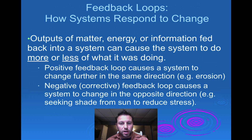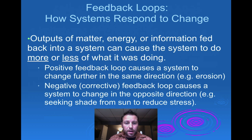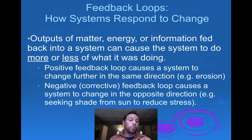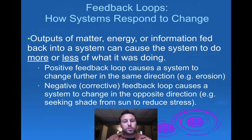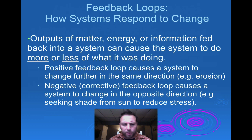Negative feedback loops are where a change occurs and then an opposite change happens in response. One easy example is with humans: when we sweat, we sweat because we're hot, then the water droplets on our skin evaporate and our temperature cools — that's a negative feedback loop. A change in one direction causes an opposite effect. Thermostats in your house are another example: you turn the heat on to 70 degrees, the house heats up until it hits that threshold, then it stops until the house cools down again and the heat kicks back on.